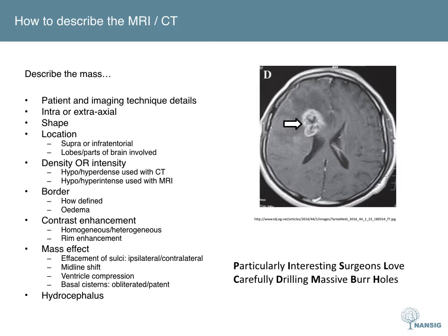Comment also on the shape and location of the lesion. On the right side, this is an irregular, roughly circular lesion located within the frontotemporal areas of the brain. Then comment on the density or intensity — terms referring to how white the lesion is compared to surrounding brain parenchyma. On the right it's clearly hyperdense; on an MRI scan you'd say it was hyperintense. Also comment on the border of the lesion, how well defined it is, and whether there is oedema around it. On the right it is well circumscribed with surrounding oedema from the associated hypodense areas.